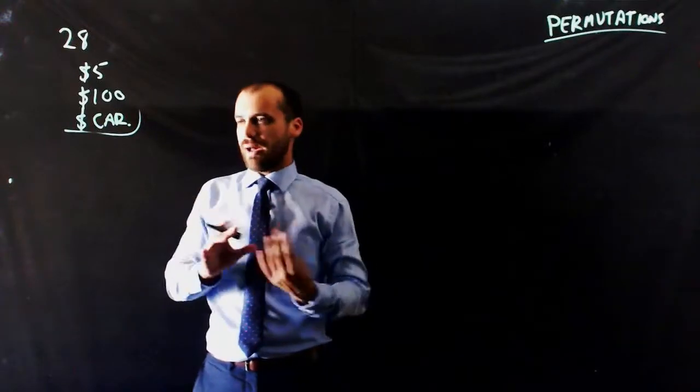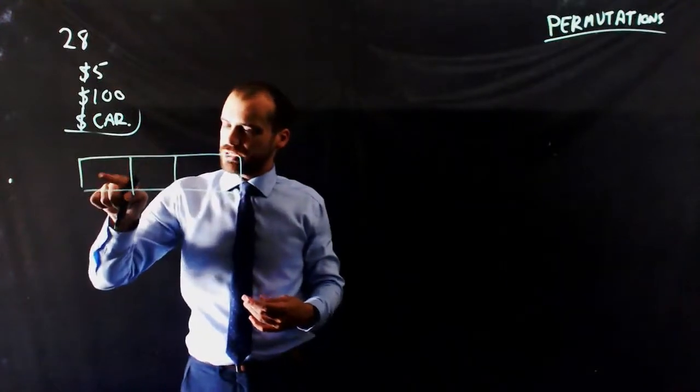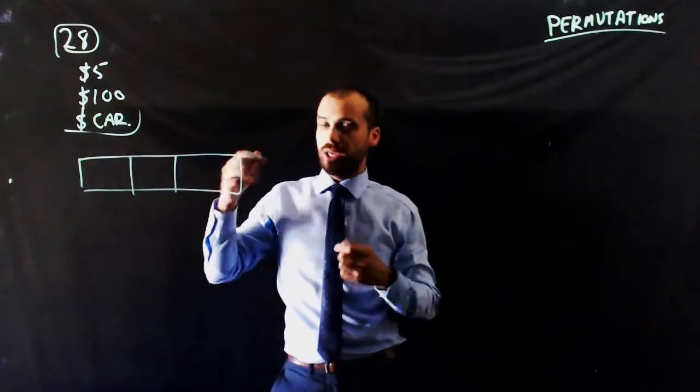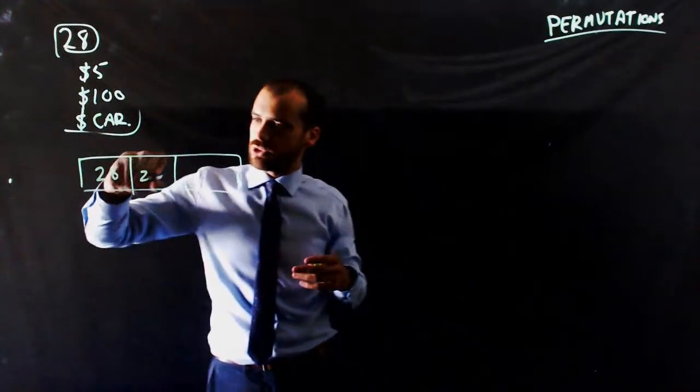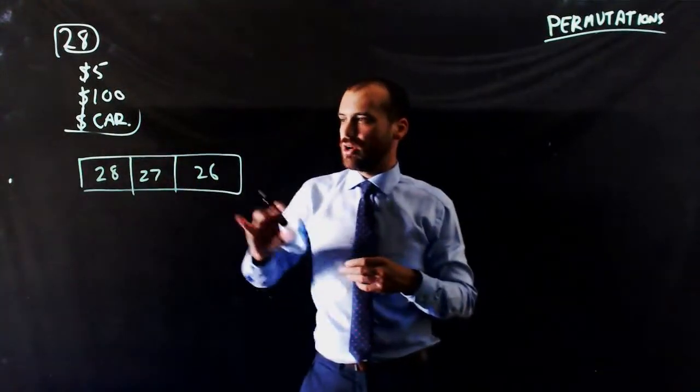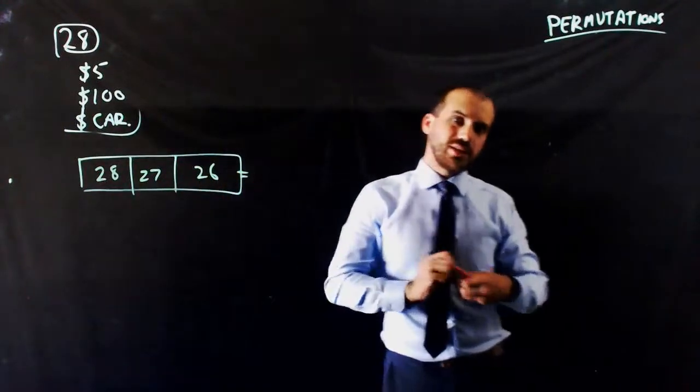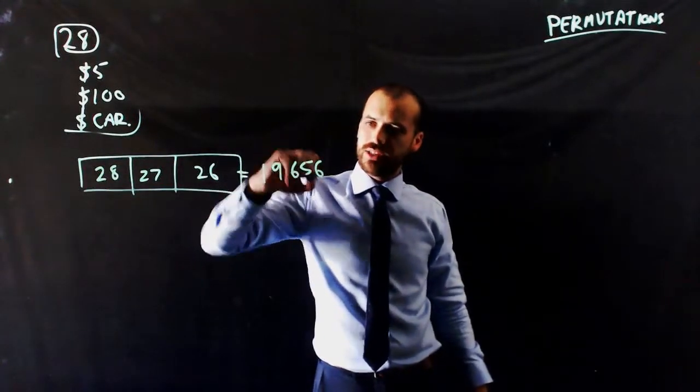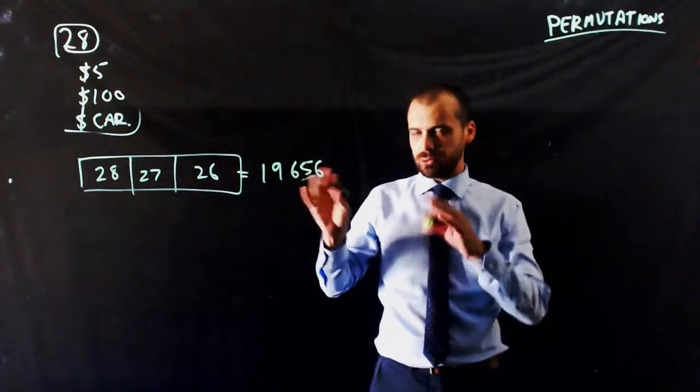How many different things could happen in this scenario? Well, the first thing is that one of the 28 students will get $5. One of the remaining 27 students will get $100 and one of 26 students will get the car. 28 times 27 times 26, I think it's a big number. 19,656 different things can happen. Different people getting different prizes.